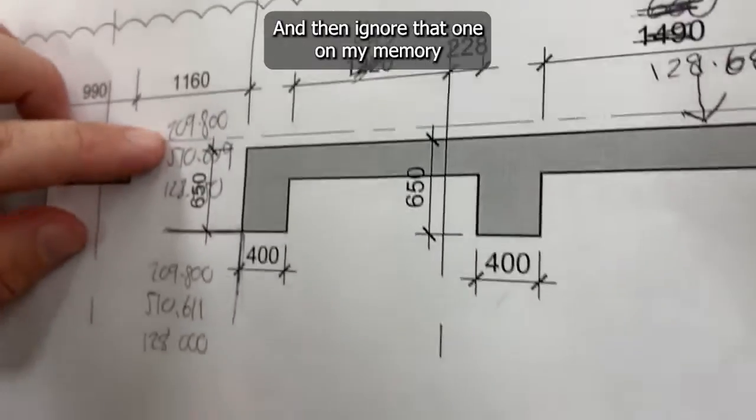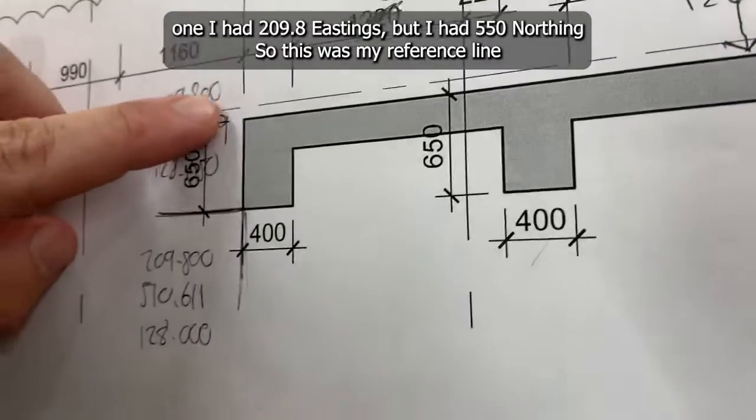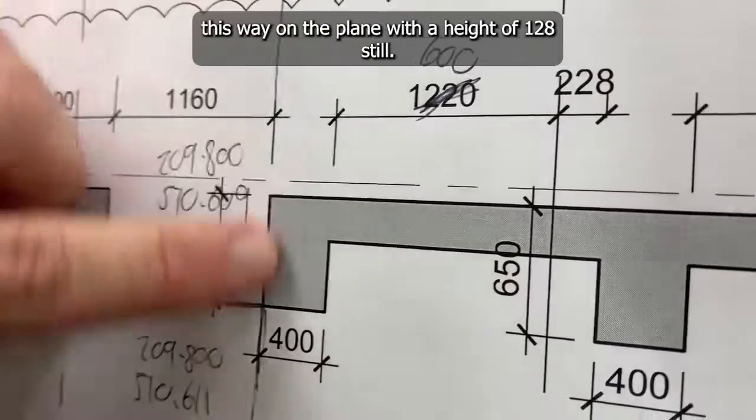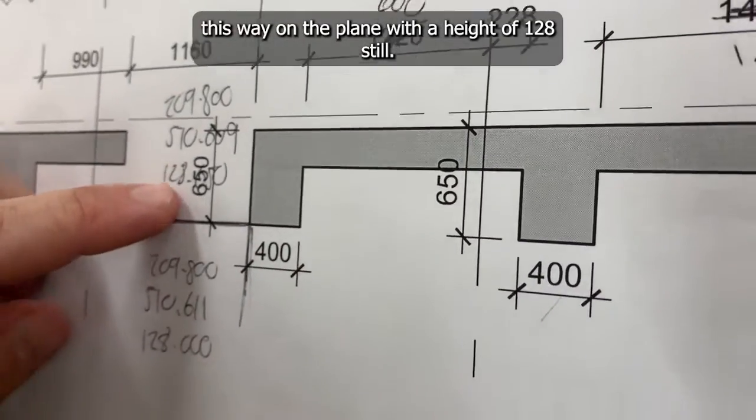On my memory one, I had 209.8 eastings, but I had 550 northings. This was my reference line this way on the plane with a height of 128 still.